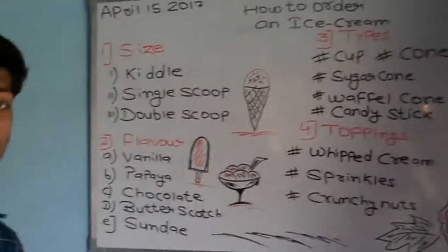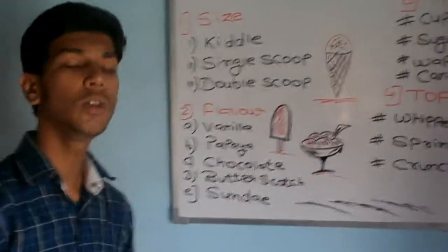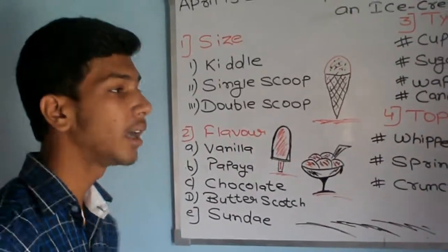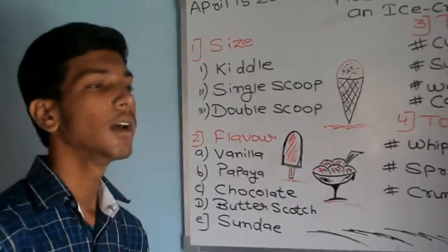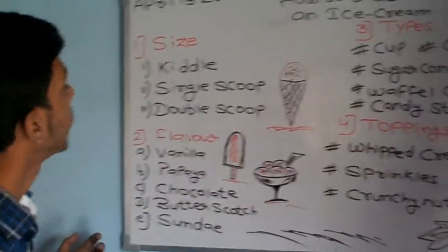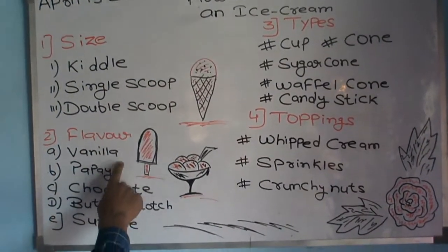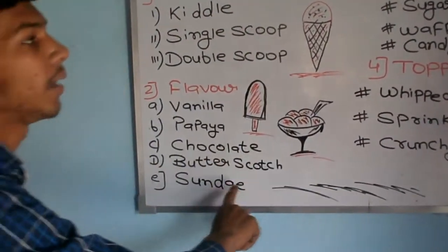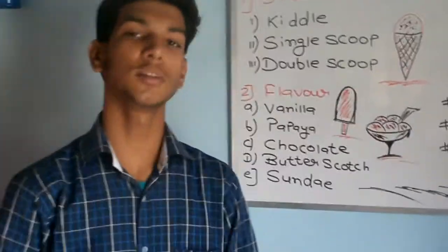Now let's talk about how to order it. You can use one sentence when you order something. For example: 'I would like to have one single scoop of vanilla ice cream in a cup with extra sprinkles.' Or you can say: 'I would like to have a double scoop of chocolate ice cream in a sugar cone with crunchy nuts.'